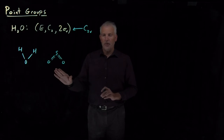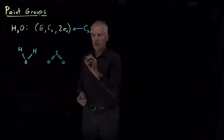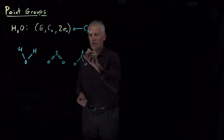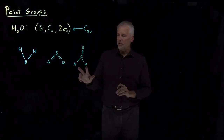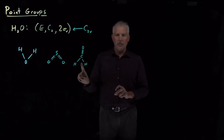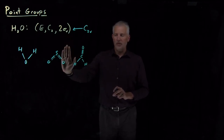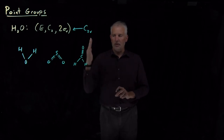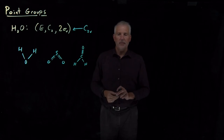Any molecule with the bent geometry will have C2V symmetry, but it doesn't have to be a triatomic bent molecule. Formaldehyde, for example — after I've drawn the three-dimensional structure — is also in the C2V point group. It has a C2 rotation along the carbonyl bond axis and the same two vertical reflection planes: one in the plane of the board and one bisecting the molecule in the other direction.